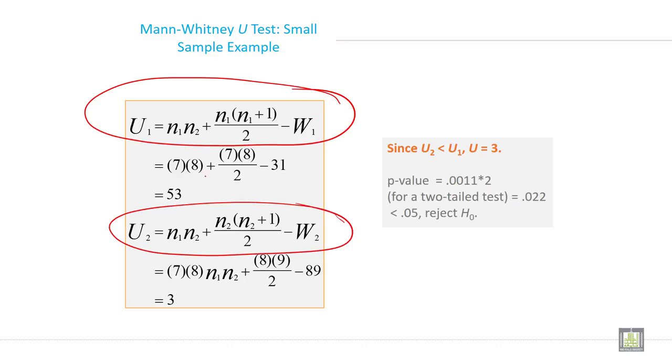Just calculate U1, it is 53, and U2 is 3. Since U2 is less than U1, and U equals 3, the p-value is 0.0011 multiplied by 2 for a two-tailed test, so it is 0.022, which is less than 0.05. Therefore, reject the null hypothesis.